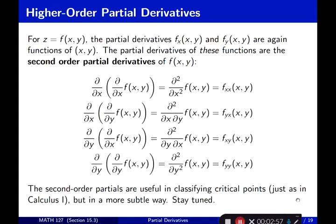All second-order partials of f are: partial twice with respect to x, which can also be written as f_xx; partial respect to y first then x, written as f_yx; partial respect to x first then y, written as f_xy; and partial with respect to y twice, written as f_yy. The second-order partials are very useful in classifying critical points, just like in Calculus 1 we used the second derivative test to find a local max or min.